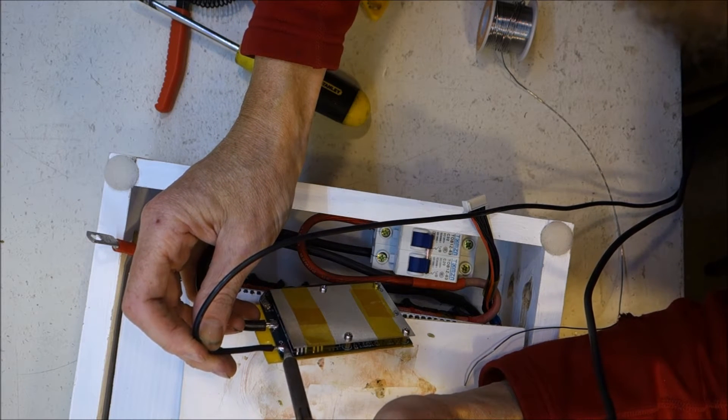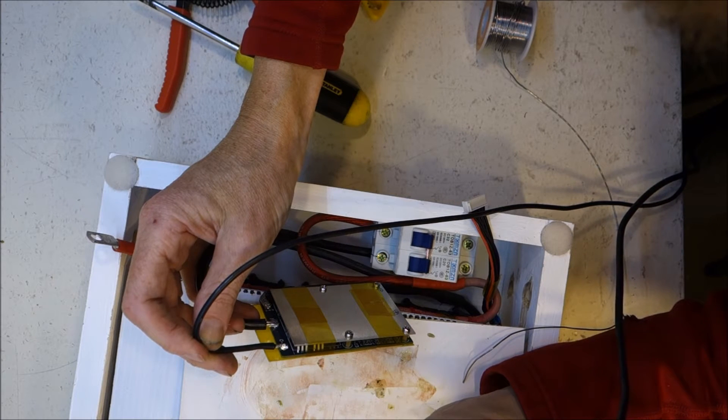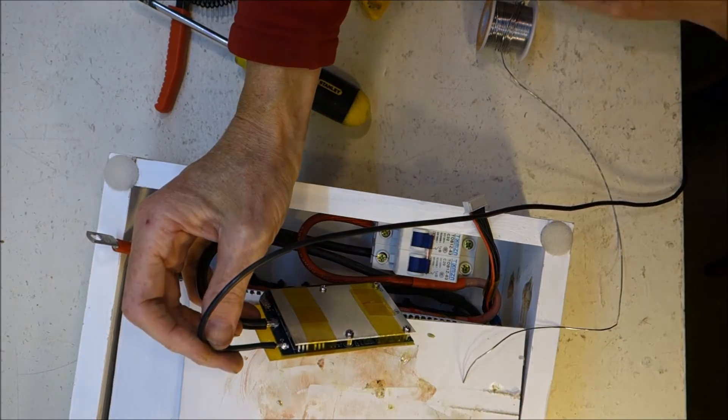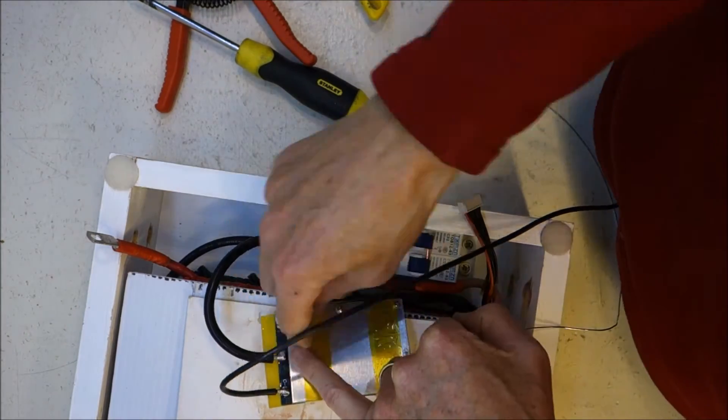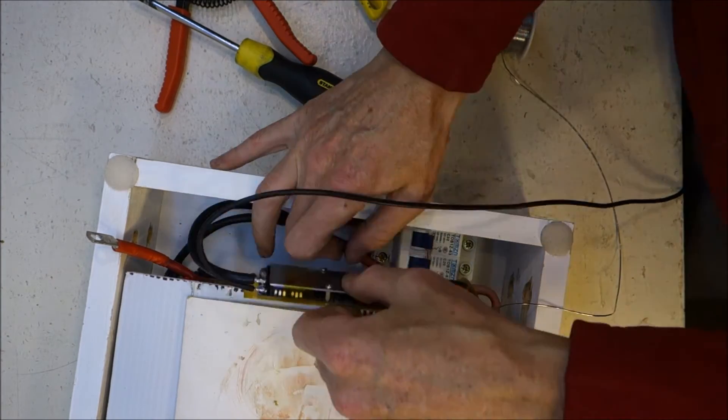That's my working assumption. I'm not going to try to go over 20 amps on this battery pack. So hopefully that BMS will cope. So the negative of the charge leads goes to C- on the BMS.